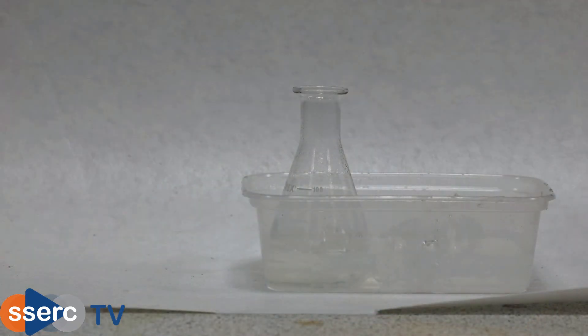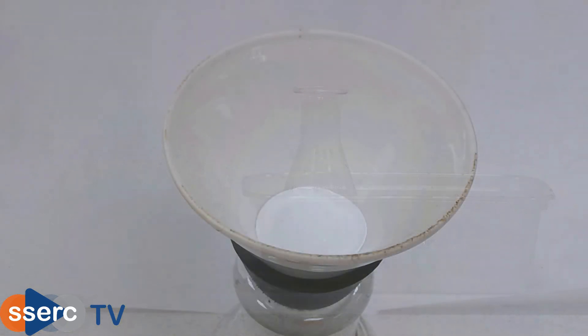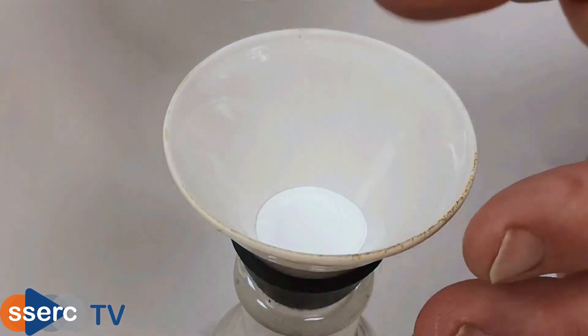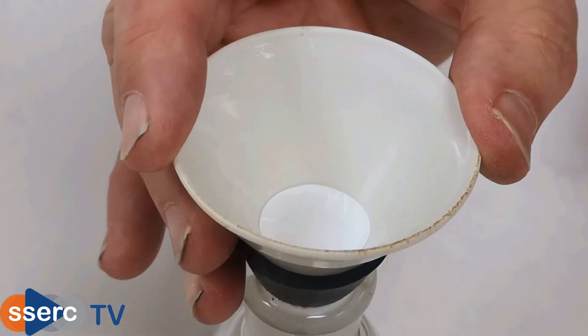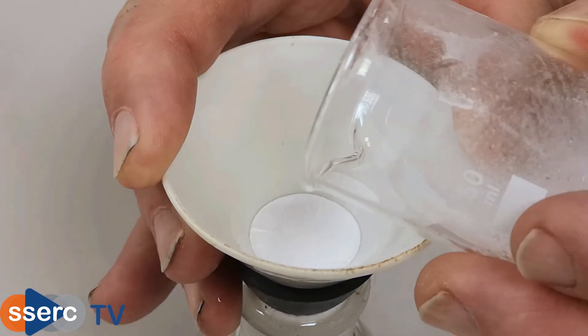Now we chill the solution to crystallize out the caffeine crystals. Once cold we then vacuum filter using a Buchner funnel or in this case a Hirsch funnel. The cold slurry of caffeine crystals is poured onto the filter paper and the solvent is sucked through by the vacuum.